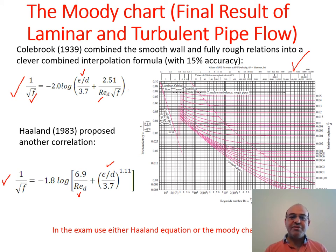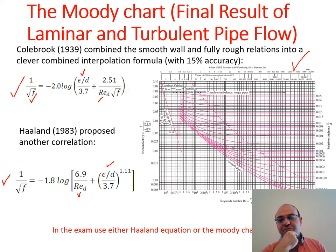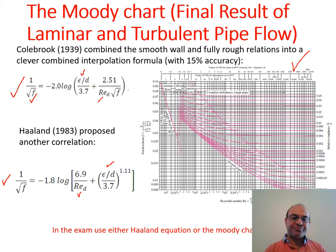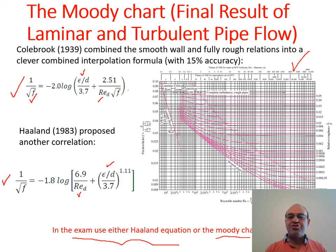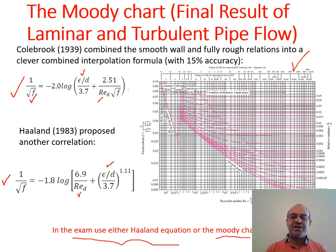Instead of using the Moody chart, we can use the Haaland correlation from 1983, which is mathematically equivalent to the Colebrook equation but is explicit in F. This means F appears only on the left side, so with known Reynolds number and ε/D, we can directly calculate the friction factor without iteration. The error between the Colebrook and Haaland equations is negligible.